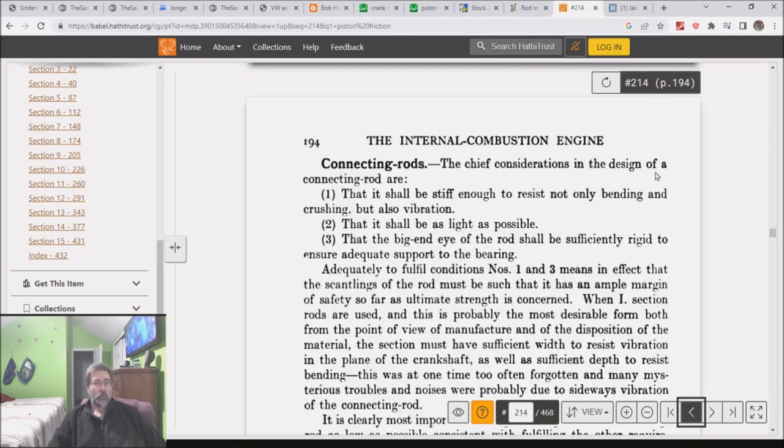Here we are, connecting rods. The chief considerations in the design of a connecting rod are: 1. It shall be stiff enough to resist not only bending and crushing but also vibration. 2. That it shall be as light as possible. And 3. That the big end shall be sufficiently rigid to ensure adequate support of the bearing. And that is it. As it turns out, there is in fact no Ricardo rule.